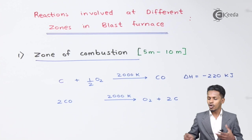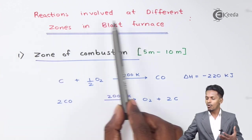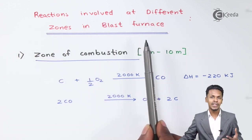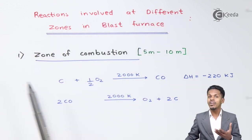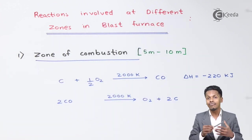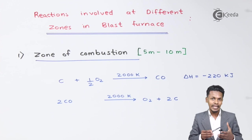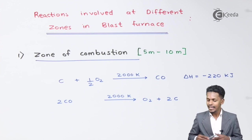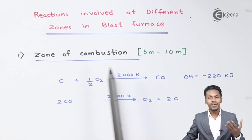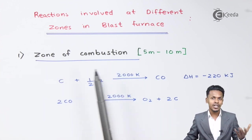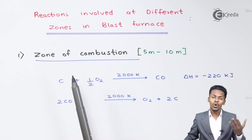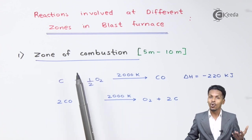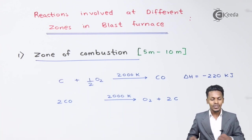In this topic I am going to talk about the reactions involved at different zones in blast furnace. There are different reactions and different zones, divided into four types: zone of combustion, zone of reduction, zone of slag formation, and zone of fusion.